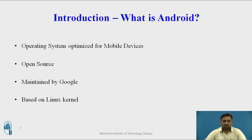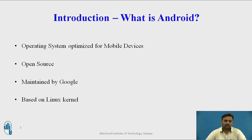Open source means the code of the operating system is widely accessible and modifiable for the whole world, because whatever code is there, we can individually update it, modify it, and launch a better version of that particular operating system. That is why it is called open source. And this operating system is maintained by Google.